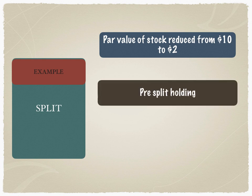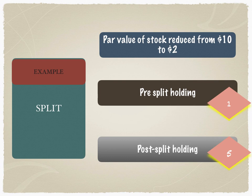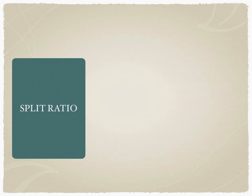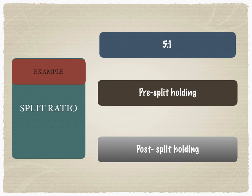This is how you evaluate the portfolio impact. If the pre-split holding is one share, then the post-split holding is five times that, because the par value is reduced from ten dollars to two dollars — so the post-split holding is five shares. Another way to make the split announcement is through the split ratio. If the split ratio is five-to-one, the pre-split holding is one share and the post-split holding is five shares, which automatically means the par value has been reduced.